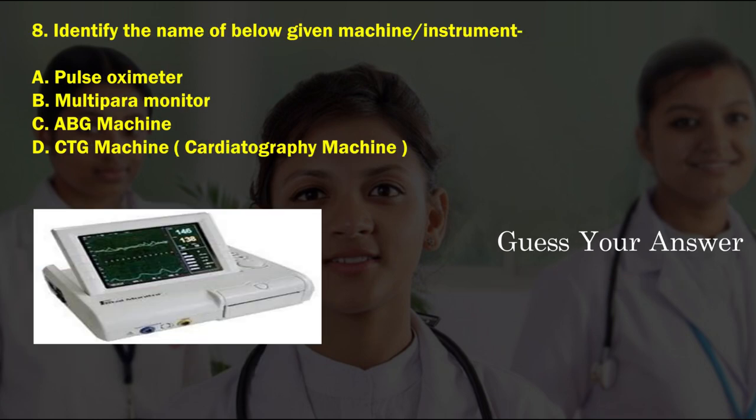Identify the name of the below given machine or instrument. Option A: pulse oximeter, option B: multi-para monitor, option C: ABG machine, option D: CTG machine. The correct answer is option D, CTG machine.